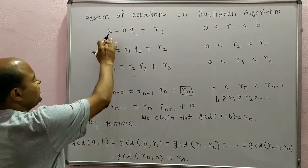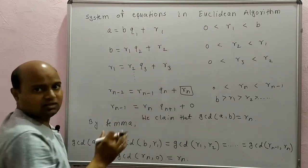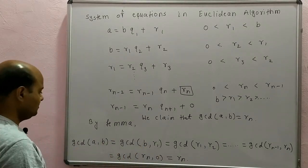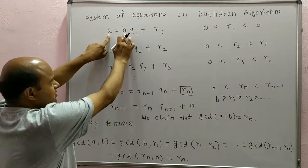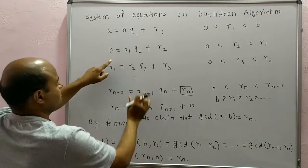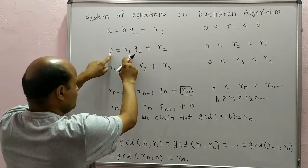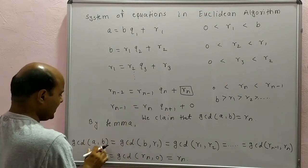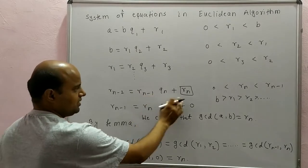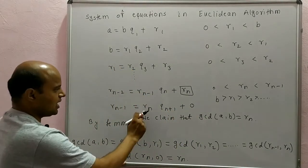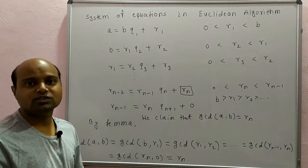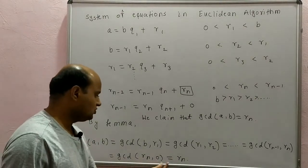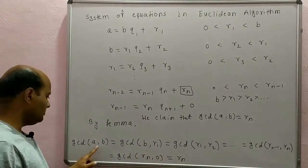We have already seen the lemma: if A = B·Q1 + R1, then GCD(A,B) = GCD(B,R1). Applying the lemma repeatedly: GCD(A,B) = GCD(B,R1) = GCD(R1,R2) = … = GCD(R_{n-1}, Rn) = GCD(Rn, 0). And GCD(Rn, 0) is Rn, because Rn divides 0 and Rn divides itself. Therefore GCD of A and B equals Rn.